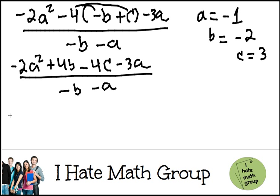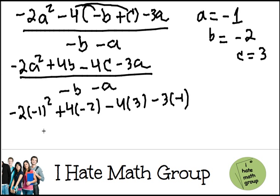Okay, so let's go ahead and substitute. So I have negative 2, negative 1 squared plus 4 times negative 2 minus 4 times 3 minus 3 times negative 1 all over negative negative 2 minus negative 1.